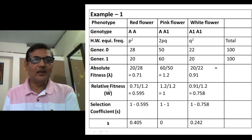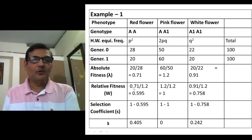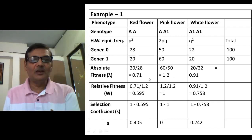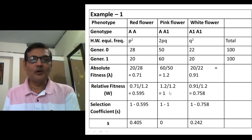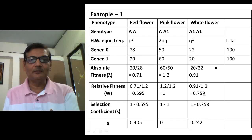Now you must calculate relative fitness, indicated by capital W. To do this, identify the largest absolute fitness value among the three, which is 1.2. Divide all three values by this maximum: 0.71 divided by 1.2 gives 0.59; 1.2 divided by 1.2 gives 1; and 0.91 divided by 1.2 gives 0.758. These are the relative fitness values for the three genotypes.